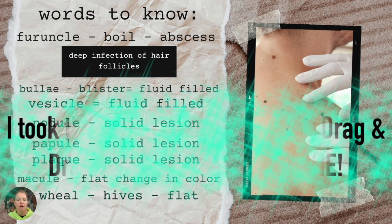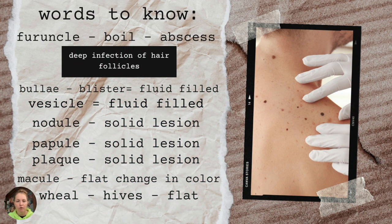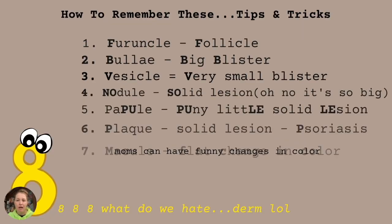Here are the words to know. We have a furuncle, which is also a boil or an abscess — it's a deep infection of the hair follicle. Then we have a bullae, which is a blister and is fluid filled. A vesicle is also fluid filled. We have nodule, papule, and plaque, which are all solid lesions. Our macule is the flat change in color, and lastly a wheal, which is what we know to be hives — that is a flat lesion.